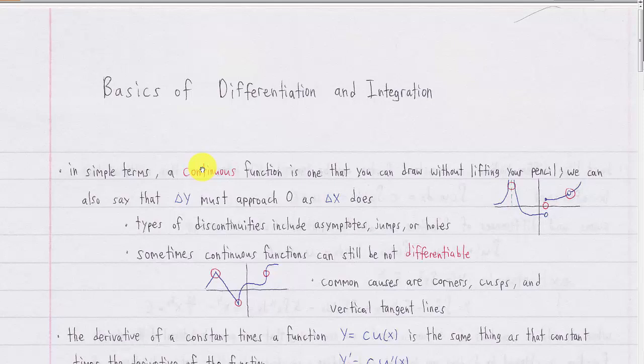A continuous function, intuitively, is just a curve that you can draw without lifting your pencil off the paper. For example, this curve over here is continuous because you can put your pencil down here and just draw it the whole way, whereas here you'd have to lift your pencil up at these points.